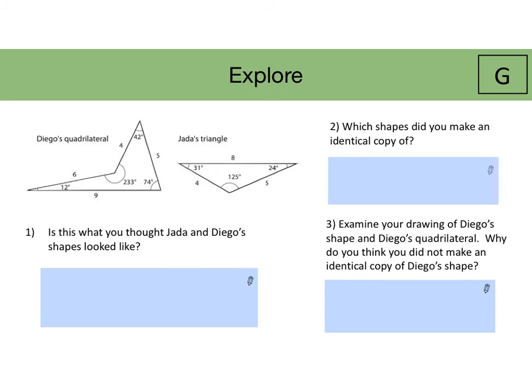And for number three, they're going to examine their drawing of Diego's shape and Diego's quadrilateral. Why do you think you did not make an identical copy of Diego's shape? Students may realize that there were different angles that they could use to make the quadrilateral of these side lanes, and that's why it's not an identical copy of Diego's quadrilateral. And for Jada's triangle, there's no way to change the angles to make a different triangle with those particular side lanes.